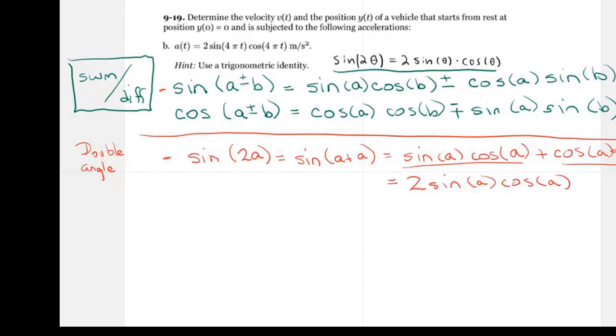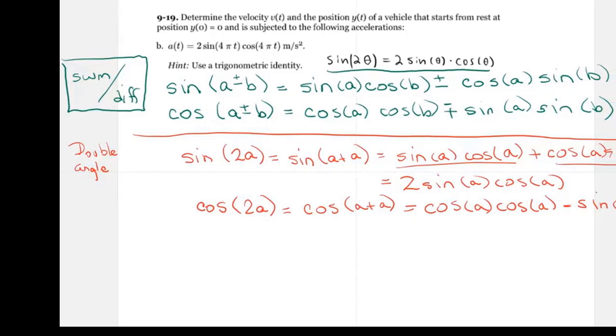And the same is true for the cosine. For the cosine, if we do the same, we want the cosine of 2A, that's equal to the cosine of A plus A, which is equal to the cosine of A times the cosine of A, because A equals B now. And then the signs flip. So I have a plus here, which gives me a minus here, and I get sine of A, sine of A. And that's going to equal cosine squared A minus sine squared A.